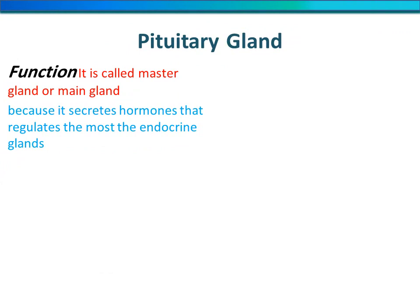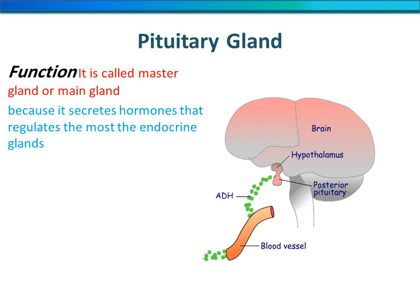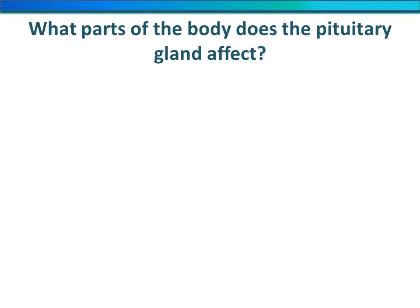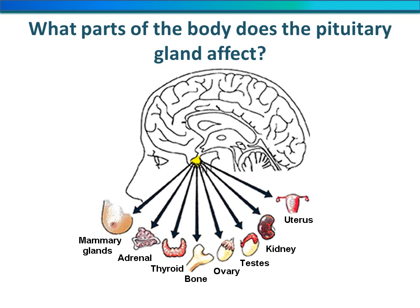The pituitary gland is called the master gland or main gland because it secretes hormones that regulate most of the other endocrine glands in our body. The parts of the body that the pituitary gland affects include: the mammary glands, adrenal gland, thyroid gland, bones, ovaries, testes, kidneys, and uterus. All of these are controlled by the pituitary gland.